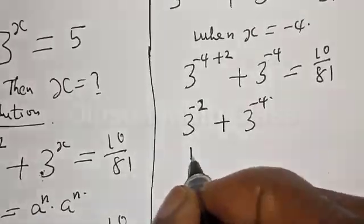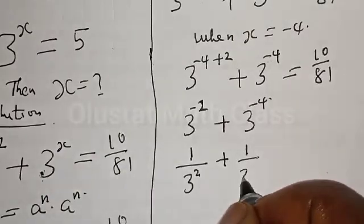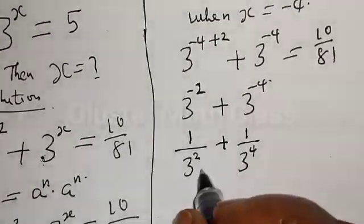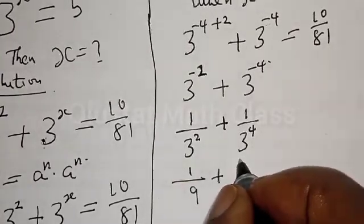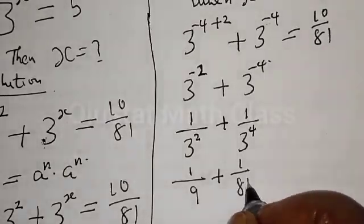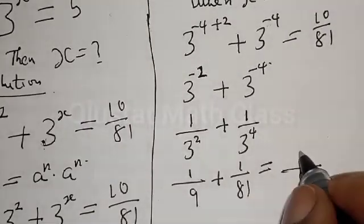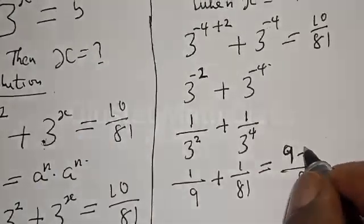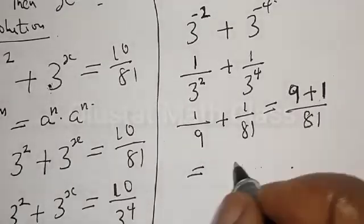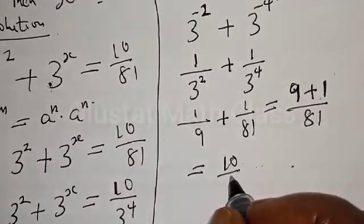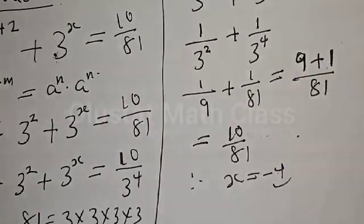We have 1 divided by 3 squared, plus 1 divided by 3 raised to the power 4. That is 1 over 9, plus 1 over 81. The common denominator is 81, giving us 9 plus 1, over 81, which equals 10 over 81. Therefore, x equals negative 4 satisfies the given equation.